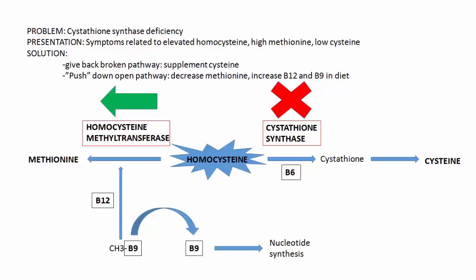How do we go about fixing it? We need to supplement what we're losing from the broken pathway, so we need to give that cystine back. But the problem we're worried about is homocysteine building up, so we need to create incentive for homocysteine to go down the left-sided pathway. We achieve this by supplementing vitamins B12 and B9 — the tools needed for that pathway to work — as well as reducing the amount of methionine in the diet. If there's less methionine in the diet, there's more incentive for homocysteine to become converted to it.